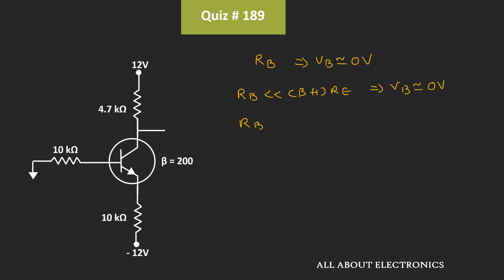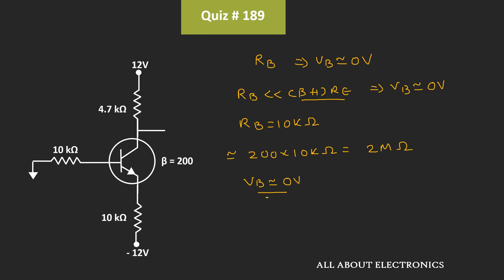Here, the value of the base resistance is equal to 10 kΩ, while the value of β is equal to 200. So we can say that the approximate value of (β+1)×Re is equal to 200 times 10 kΩ, which is 2 MΩ. Since this term is much larger than the base resistance, we can assume that the base voltage Vb is approximately equal to 0V.